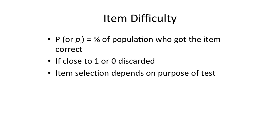So I'm going to tell you a little bit about item difficulty. Item difficulty is the proportion of a population that got an item correct, and those are p-values. P-values go from zero to one. If they're close to zero, that means nobody got that item right, so it's way too hard — that doesn't tell you anything, so you get rid of it.